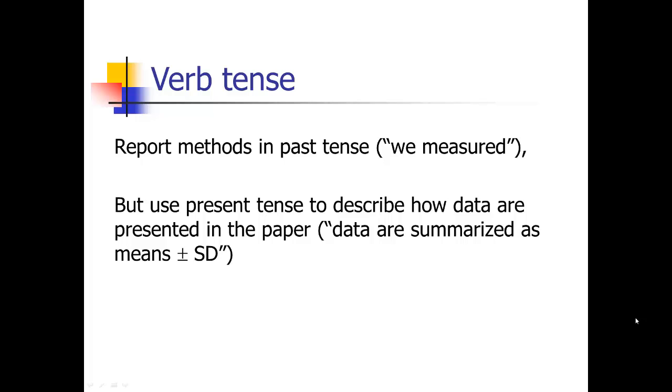For the verb tense, in the methods section, as in the results section, you're going to report methods that are already completed in the past tense because it's already done. We measured, we enrolled, we analyzed—the data have already been analyzed, all that's in the past.